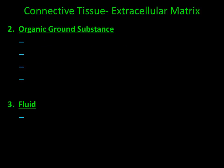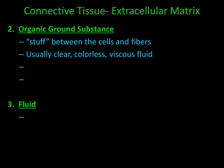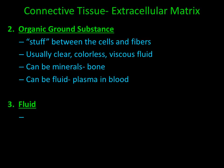The second component of extracellular matrix is called organic ground substance — the stuff between the cells and fibers. It is usually clear, colorless, and some sort of viscous fluid or jelly-like substance. However, organic ground substance can also be composed of minerals such as that found within bone, or it can be a fluid such as the plasma in blood. The last component of extracellular matrix is fluid in which cells and fibers are suspended.